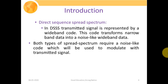The second variant is direct sequence spread spectrum (DSSS), where the transmitted signal is represented by a wideband code. We expand our narrowband signal with the help of PN sequence codes, transforming narrow band data into a noise-like wideband signal. In both types of spread spectrum techniques, we require a noise-like code to enhance the bandwidth, utilizing a PN random sequence generator.